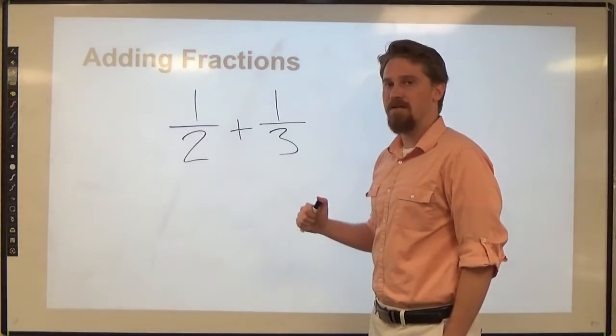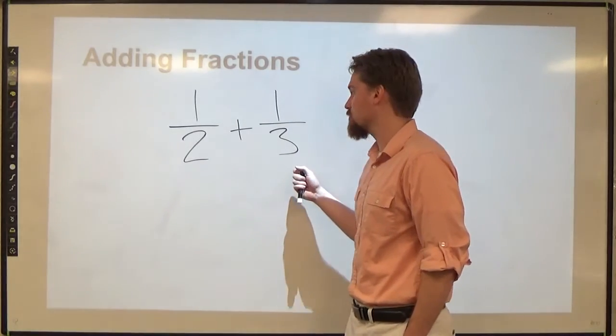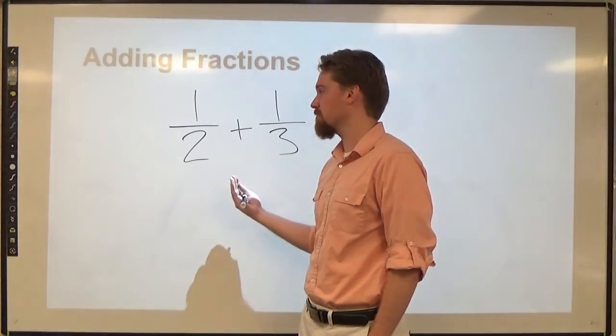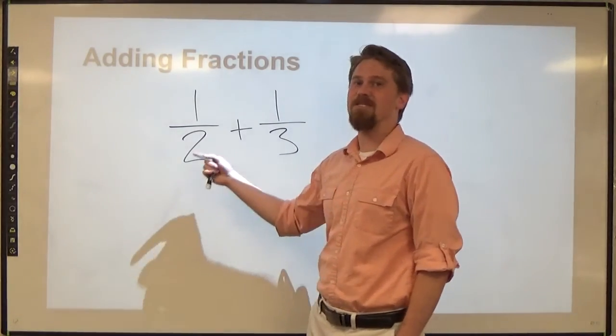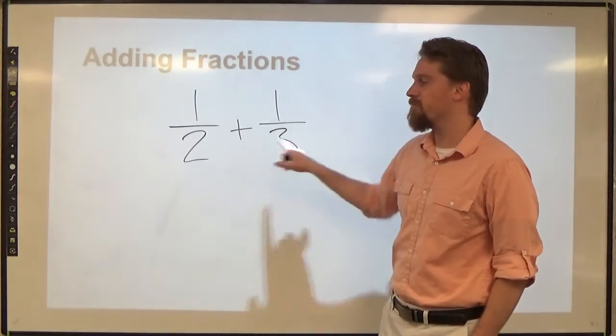The easiest way to do that is to get it to where they have the same actual number so that we have the same measuring between them. So we need to think of something smaller than 1 half and smaller than 1 third that both of them can go into.